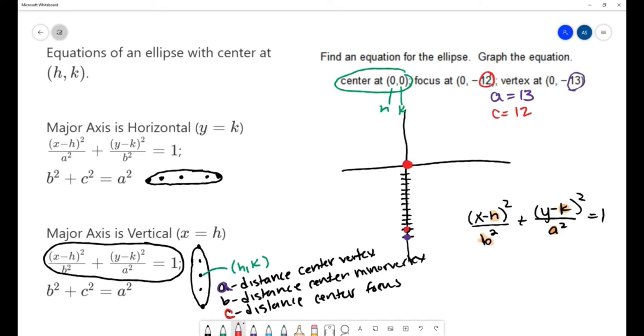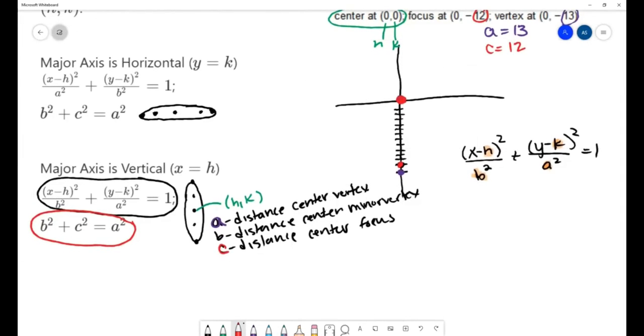Now we didn't get any information about how wide this ellipse is, so we're going to have to use this equation here to figure out what b is and that's why it's there. If we know two of them we can find the third.